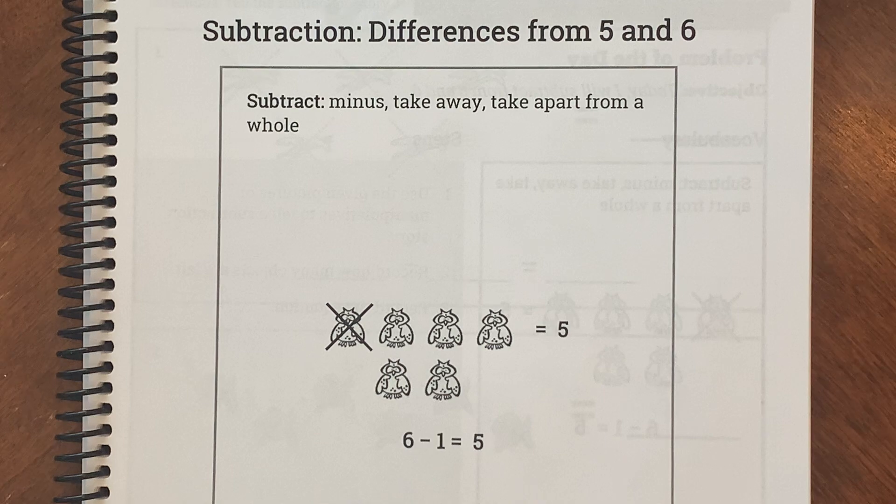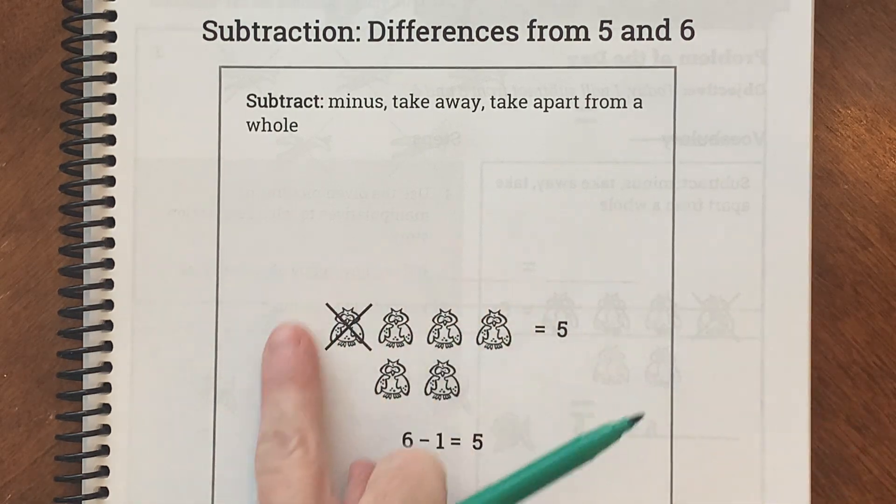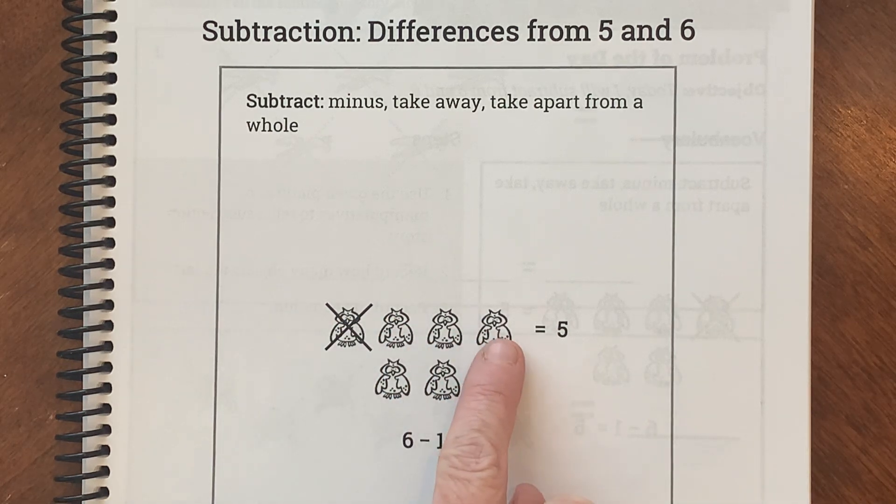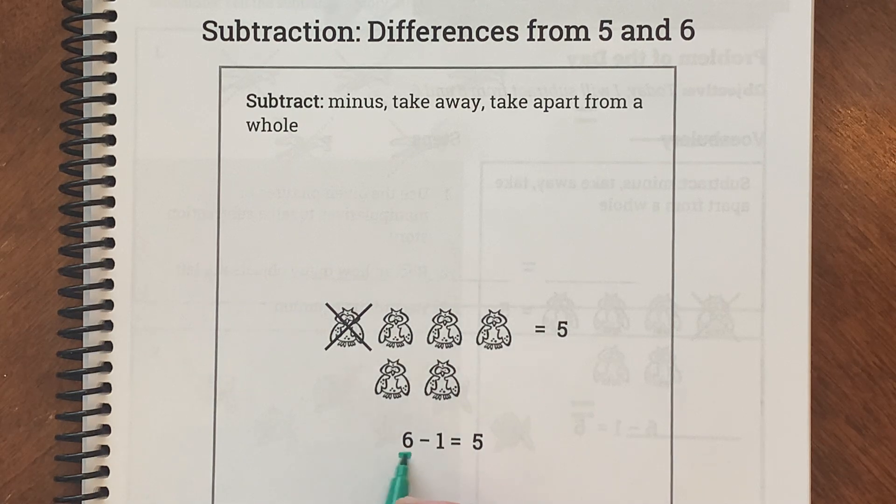So here, what do we see, friends? How many do we have all together? How many owls do we have? We have 1, 2, 3, 4, 5, 6 owls, and they wrote a 6 there.